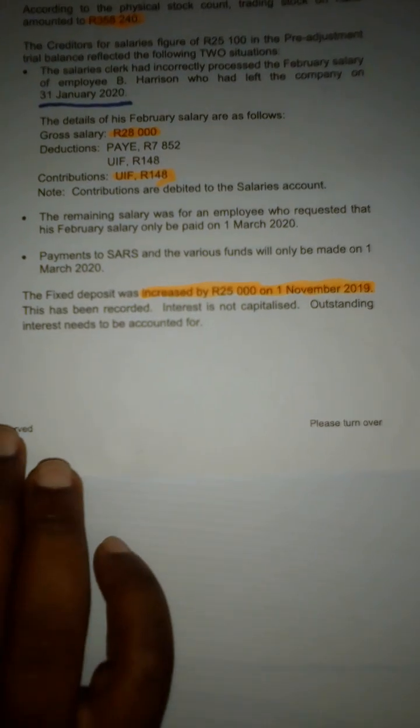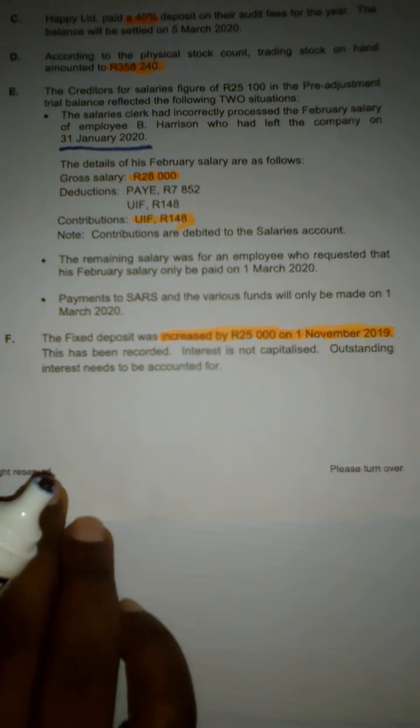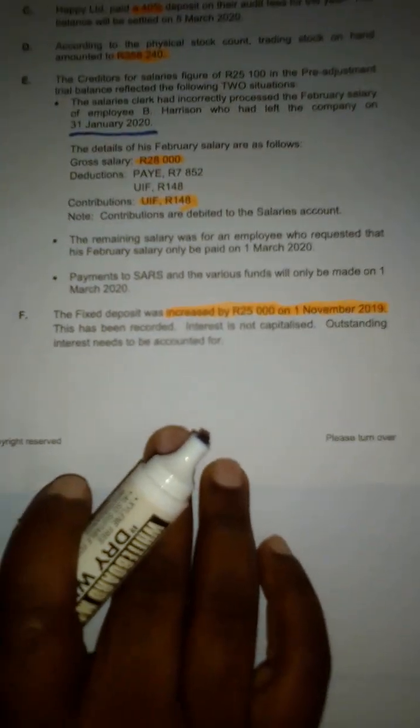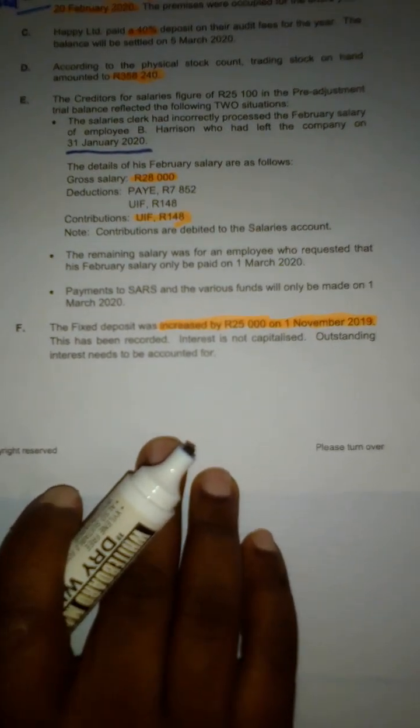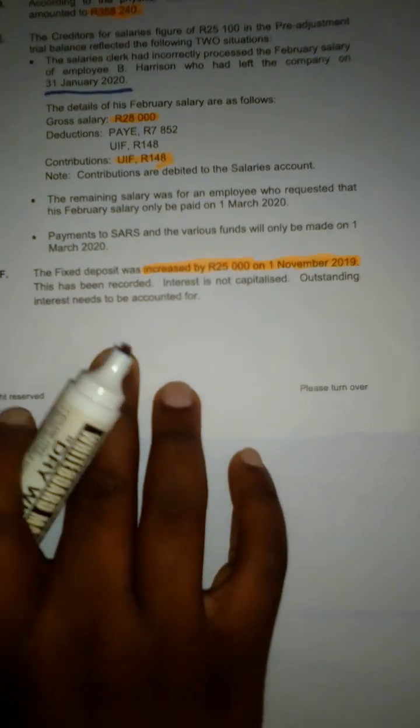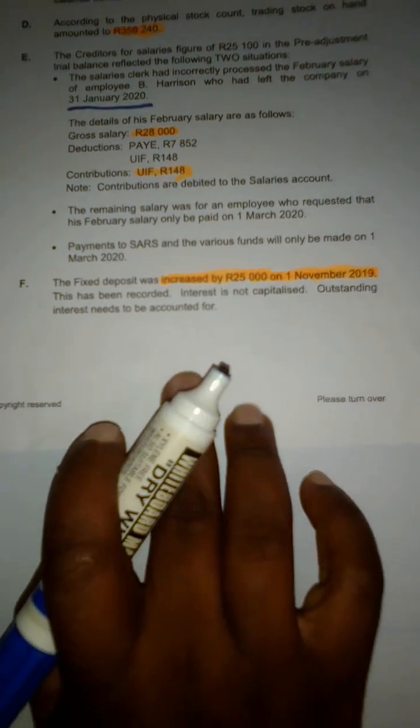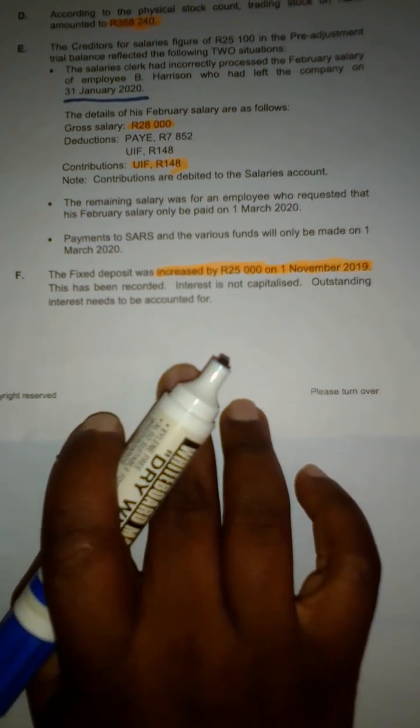Okay, now we are on adjustment number F. Adjustment number F is saying the fixed deposit was increased by $25,000 on the 1st of November 2019. This has been recorded. Interest is not capitalized, but outstanding interest needs to be accounted for.